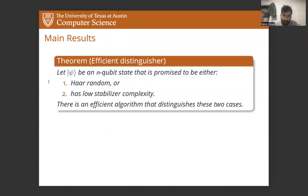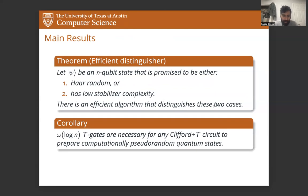Specifically, we give an efficient algorithm that distinguishes between the two. So given an n qubit state psi that's promised to be random or have low stabilizer complexity, we give an efficient algorithm that decides which. And we also have a nice corollary that little omega log n T gates are necessary for any Clifford plus T circuit to prepare computationally pseudorandom quantum states. And this is the first lower bound on the resources required to prepare computationally pseudorandom quantum states.